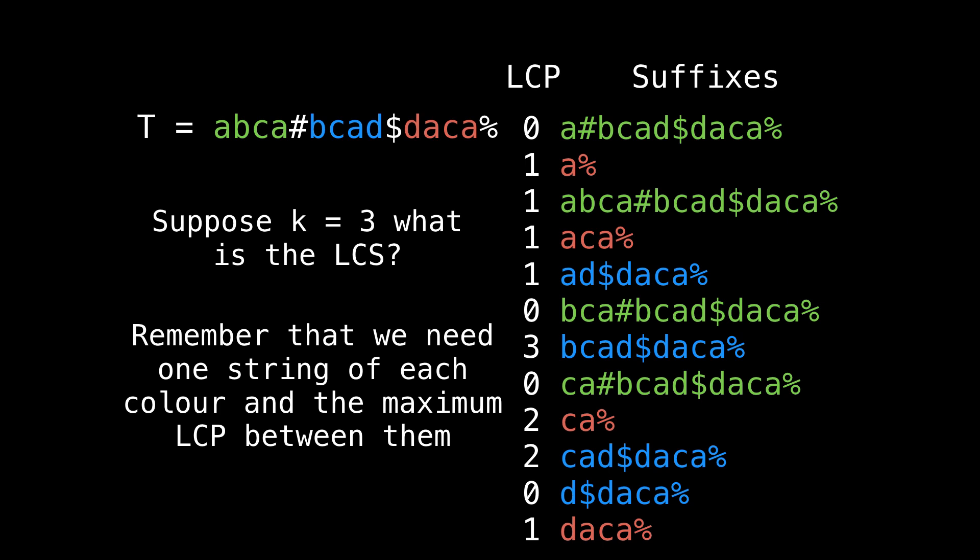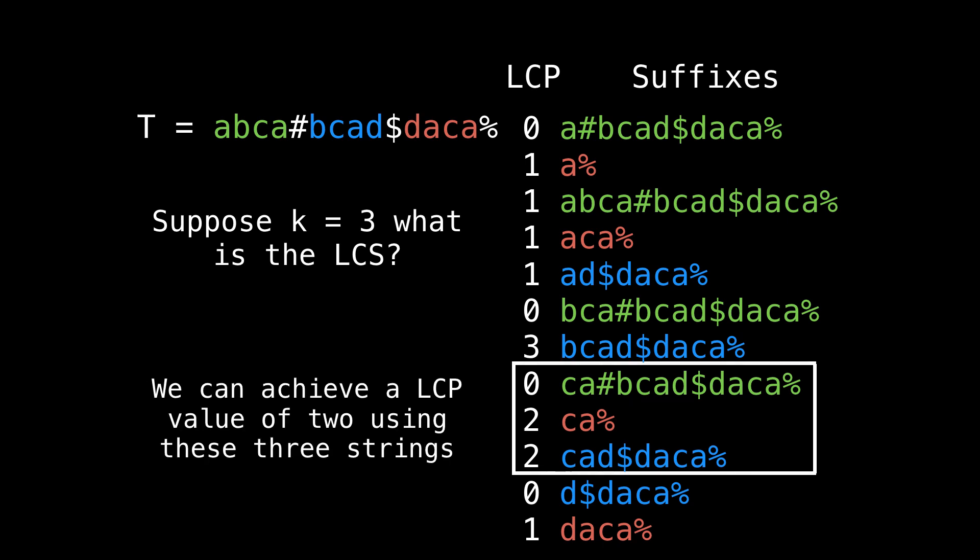Let's do an example with k equals three. Since k equals three, and we have three strings, this means that we need one string of each color. We can achieve a maximum of two if we select the following three adjacent suffixes.